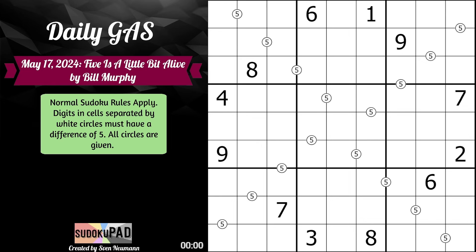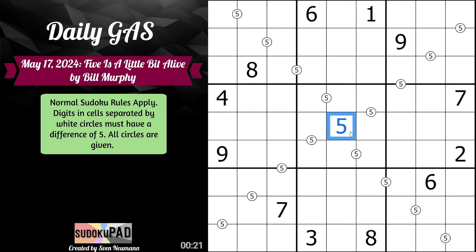Let's jump right into it. Because of the difference of five rules, it kind of reminds you a little bit of German Whispers. Five can never go on a difference-of-five cell, so right away we get a five in the center here.